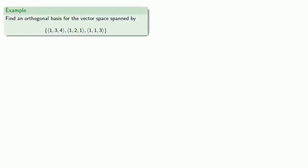So let's find an orthogonal basis for the vector space spanned by this rather innocuous set of vectors. So again, the first vector in our orthogonal set is going to be the first vector in our original set. For the second vector, we'll take that second vector in our orthogonal set and subtract off the component that is parallel to the first vector in our orthogonal set.